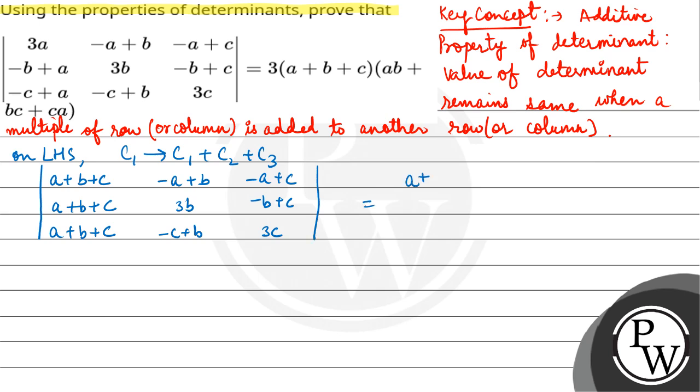This is how we can write A plus B plus C. Taking a common: 1, 1, 1, minus A plus B, 3B, minus C plus B, minus A plus C, minus B plus C, 3C.